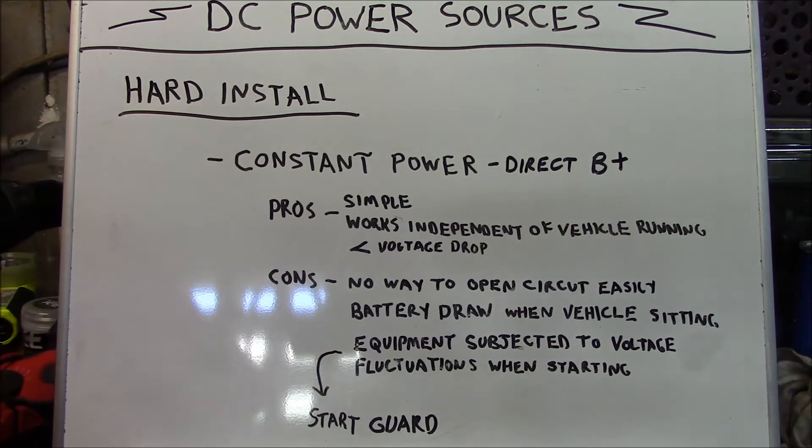And also equipment is subjected to voltage fluctuations when starting. Whenever you start your vehicle your battery voltage does drop below 12 volts and this can cause the equipment to be subjected to these fluctuations in voltage and over time this can cause damage to the equipment.